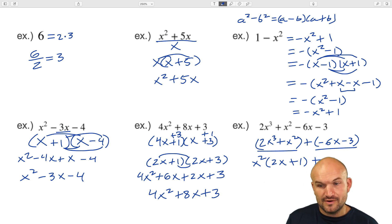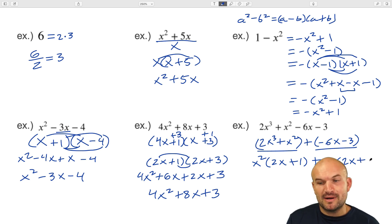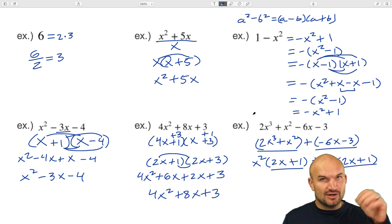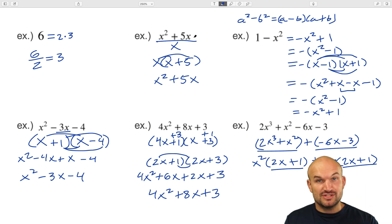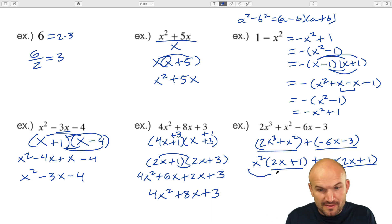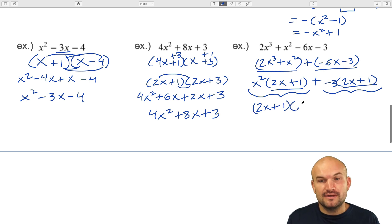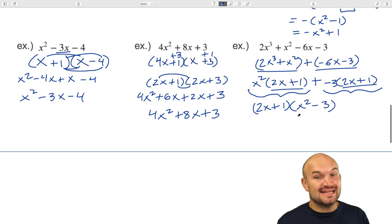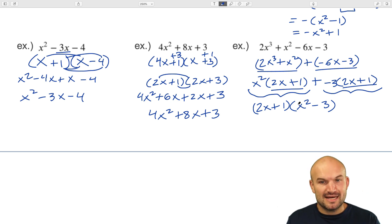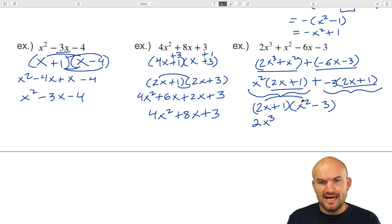For the second group, I want to factor out a number that will produce that same (2x plus 1). That number is negative three. When I factor out negative three: negative 6x divided by negative 3 is 2x, and negative three divided by negative three is positive one. Now I can see both groups have (2x plus 1) in common. I can factor out the (2x plus 1), which leaves me with x squared and negative three — so x squared minus 3. I have now rewritten the expression as the product (2x plus 1)(x squared minus 3). Checking: 2x times x squared is 2x cubed, x squared times one is x squared, 2x times negative three is negative 6x, and one times negative three is negative three.